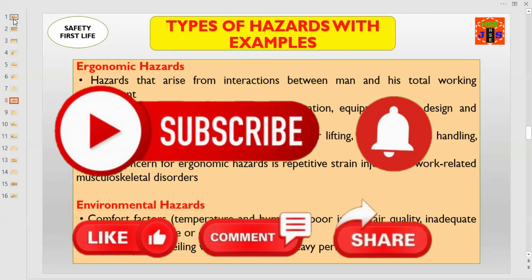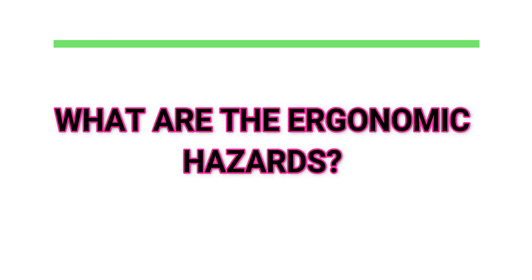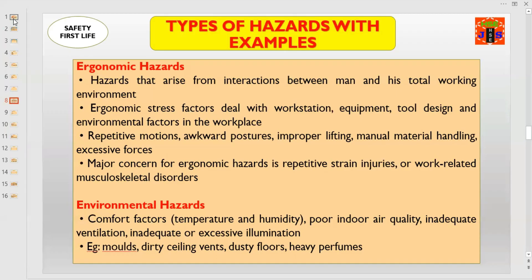Let us understand what are the ergonomic hazards. Ergonomic hazards arise from interactions between a person and their total working environment or workstations. Ergonomic stress factors deal with workstation, equipment, tool design, and environmental factors in the workplace. These include repetitive motions, awkward postures, improper lifting, manual material handling, and excessive forces. Major concerns for ergonomic hazards are repetitive strain injuries (RSI) or musculoskeletal disorders.